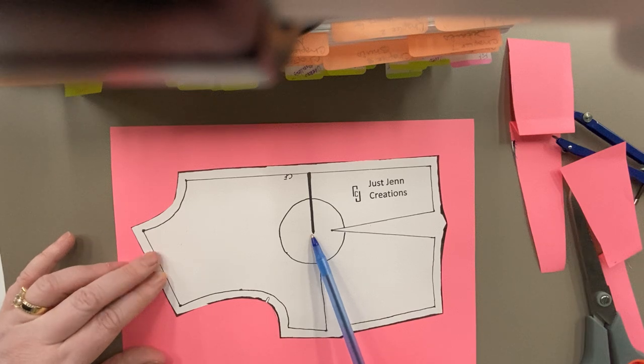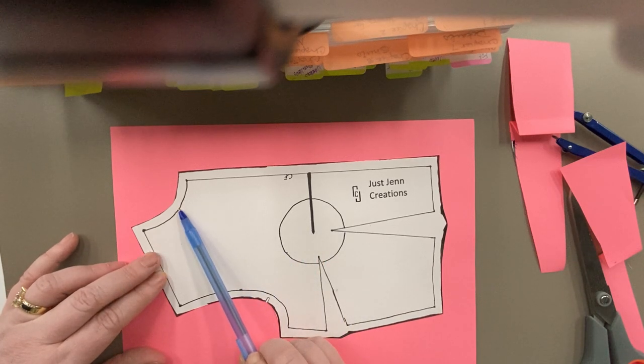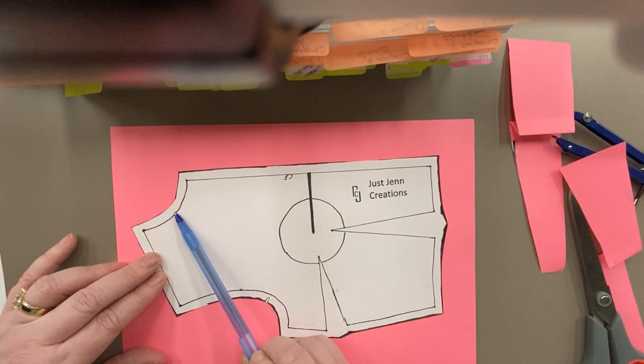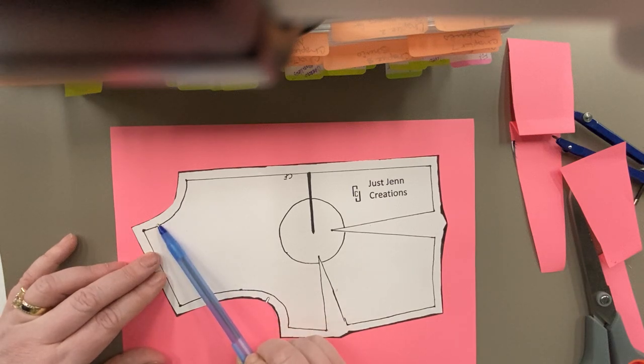Then we're going to draw a line from the bust point to somewhere in the neck. It can be in the center of the neck, close to the edge, close to the shoulder. It doesn't really matter. You find whatever line of attack you want.